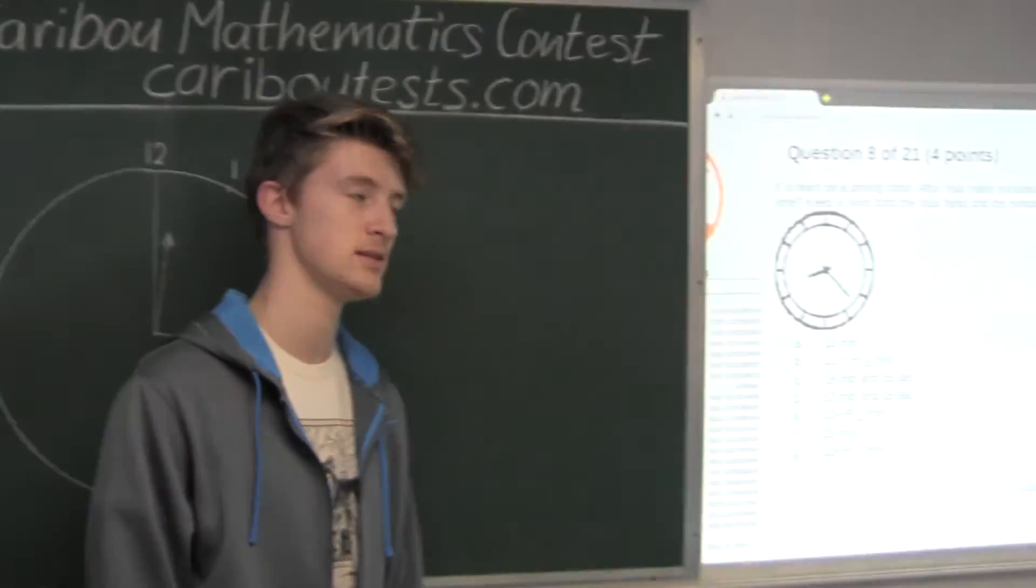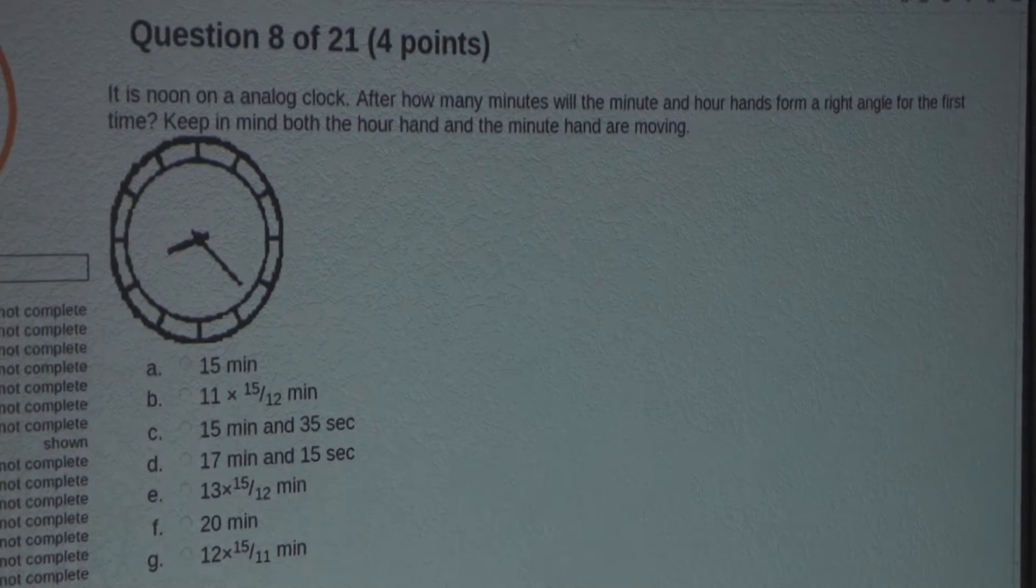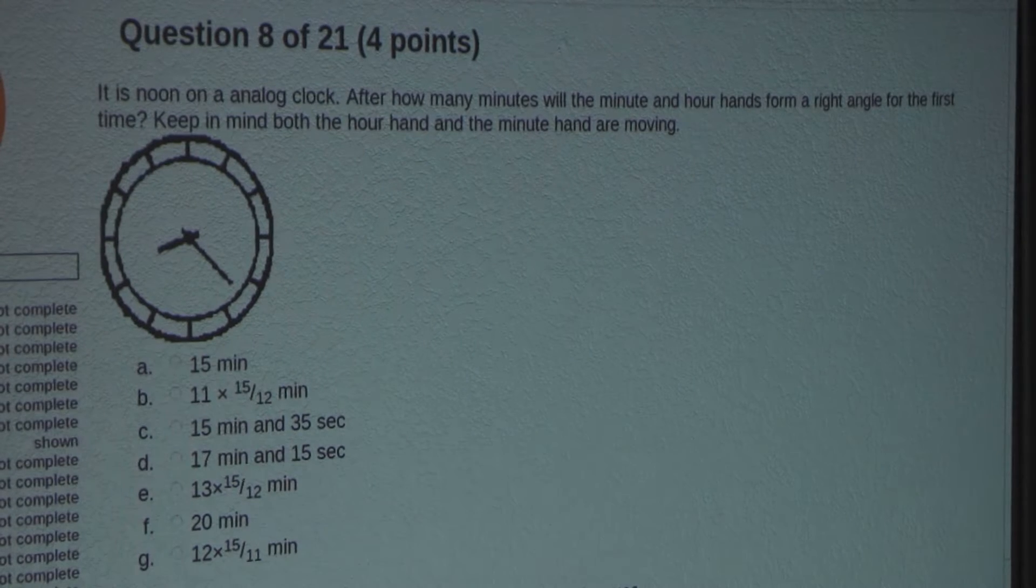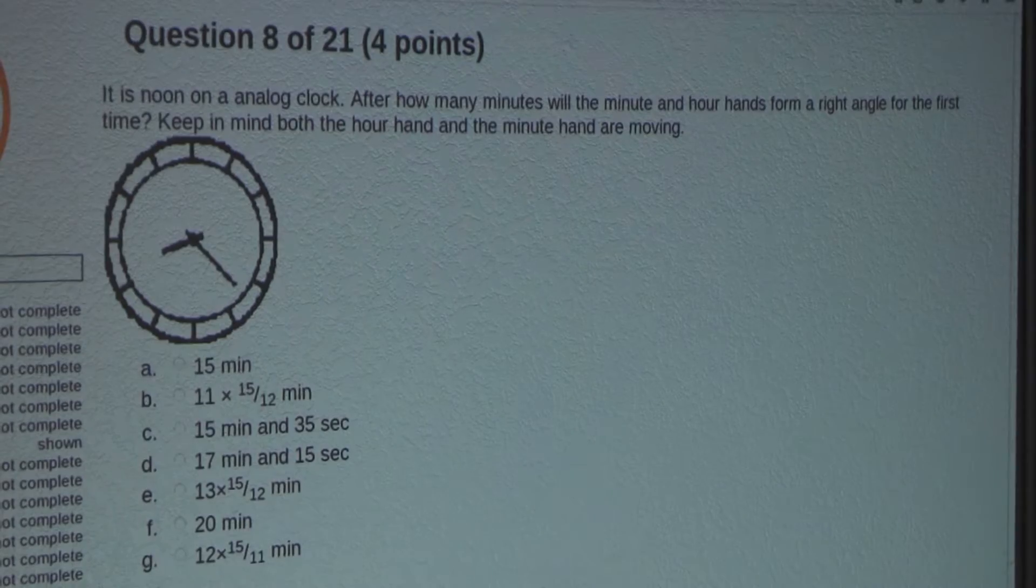So the question is, it is noon on an analog clock. After how many minutes will the minute and hour hands form a right angle for the first time? Keep in mind both the hour hand and the minute hand are moving.